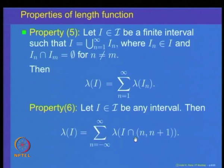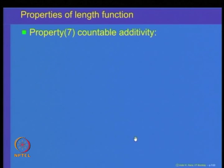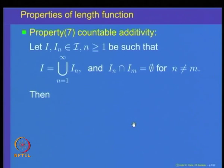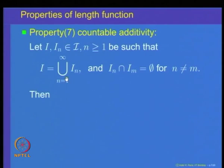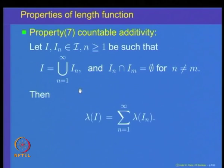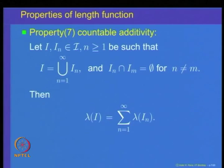Note that the length of each piece, being a finite interval, is a finite number. This says that any interval can be written as a countable disjoint union of intervals each having finite length. This important property is called the sigma finiteness property of the length function, and we are going to use it to prove the countable additive property of the length function.